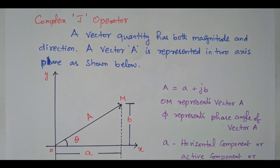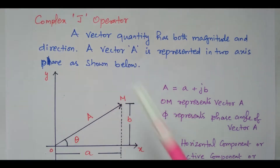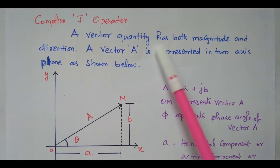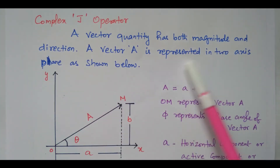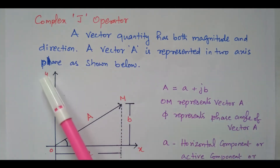Welcome viewers. In this video, we will see the complex J operator. It is used to indicate the complex number having a real term and imaginary term. That is a vector quantity, and a vector quantity has both magnitude and direction. So that is represented in a two-plane as shown below.